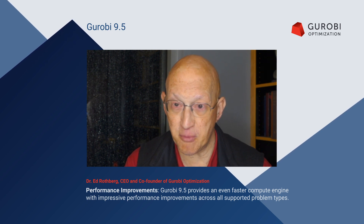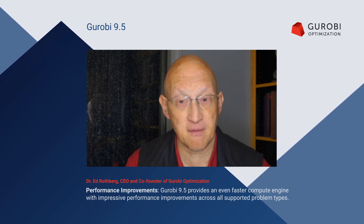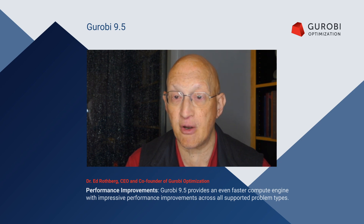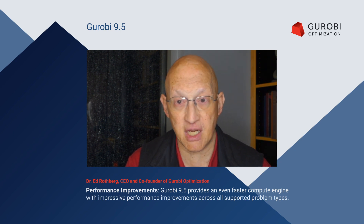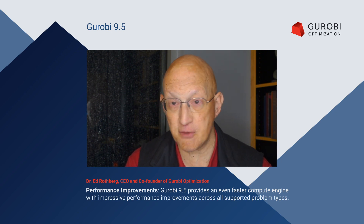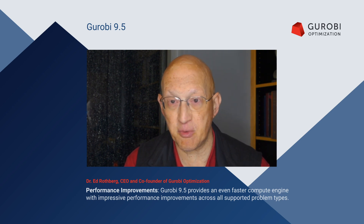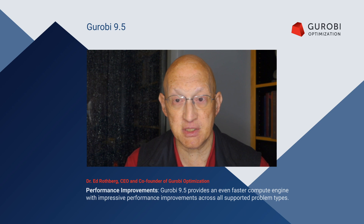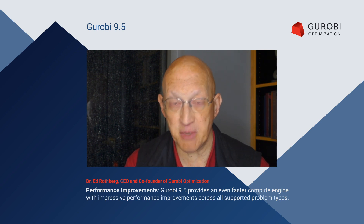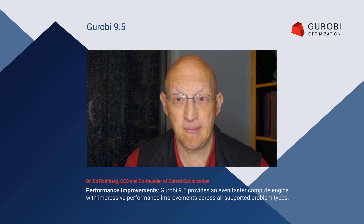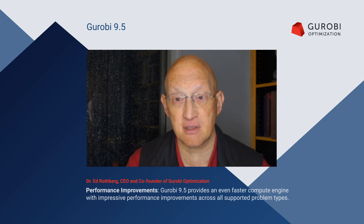We've also produced improvements on MIQP and MIQCP, but the algorithm I actually want to talk about next is our non-convex quadratic programming solver, our bilinear solver. This was new in version 9.0. We made some pretty major improvements in performance in version 9.1, and now with version 9.5 we've made even more improvements. Version 9.5 compared to version 9.1 on the broad test set is three times faster on average. And for the harder problems — the ones that take more than 100 seconds to solve — it's 7.5 times faster on average.